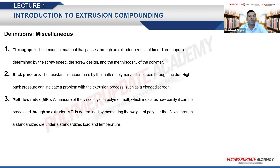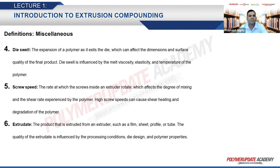Melt flow index (MFI) is a very important property — it is a measure of the viscosity of the polymer melt, indicating how easily it can be processed through an extruder. It is determined by measuring the weight of polymer that flows through a standardized die under a standardized load and temperature. Die swell is the expansion of the polymer as it exits the die, which can affect the dimensions and surface quality of the final product; it is influenced by melt viscosity, elasticity, and temperature.